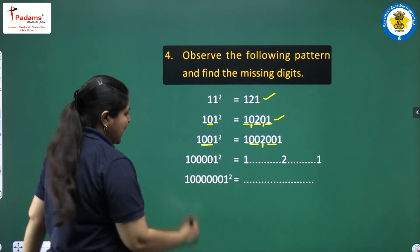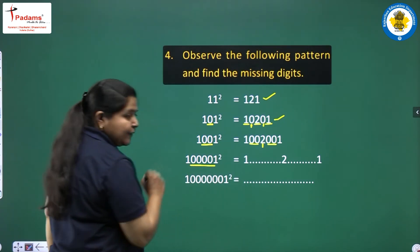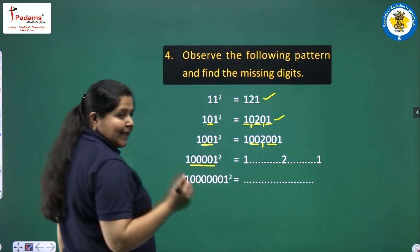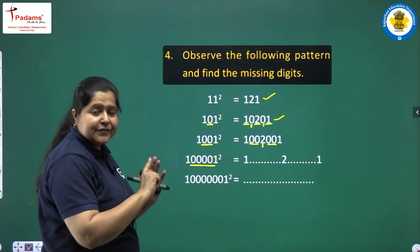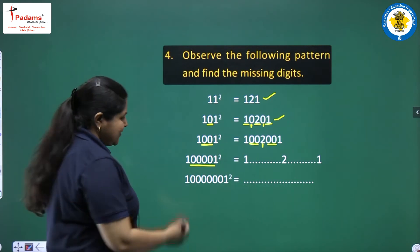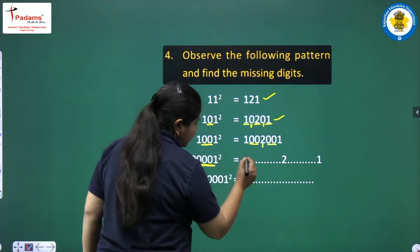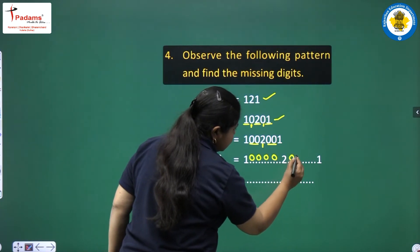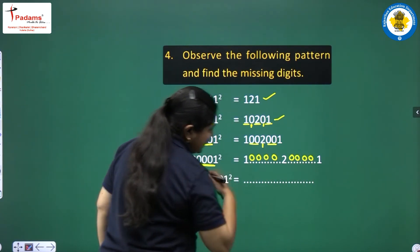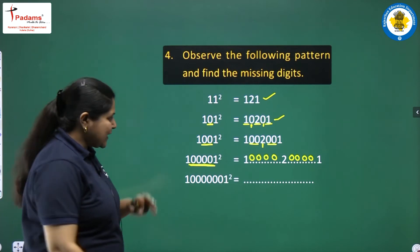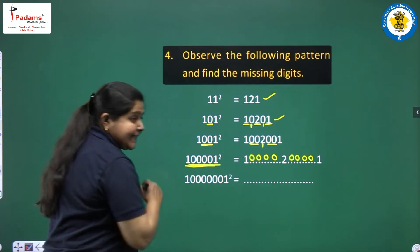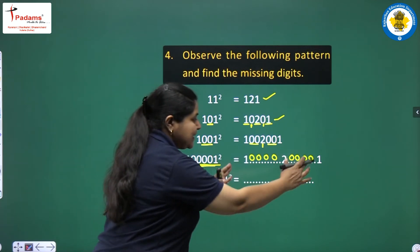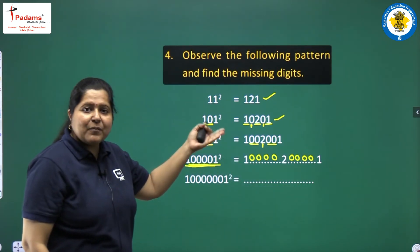It is very easy. You count how many zeros there are. In the left and right extremes there is 1, in the center there is 2. If there are 4 zeros in the question, then there should be 4 zeros on the left and 4 zeros on the right of the center. Without actually multiplying this number by itself, we are easily able to give the square just by the help of this pattern.